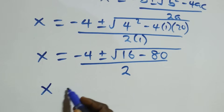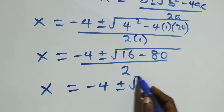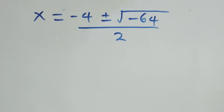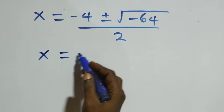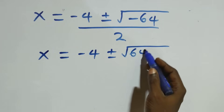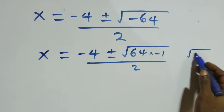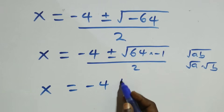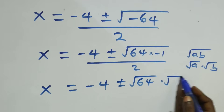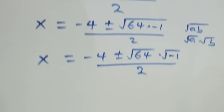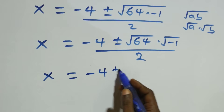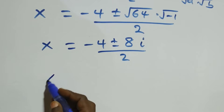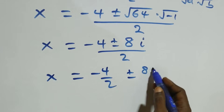This becomes x equals minus 4 plus or minus square root of 16 minus 80, which is minus 64, over 2. We write this as x equals minus 4 plus or minus square root of 64 times minus 1, over 2. Using the property that root(A times B) equals root A times root B, this becomes minus 4 plus or minus root 64 times root of minus 1, over 2. Root 64 is 8 and root of minus 1 is i, so we have minus 4 plus or minus 8i, over 2. Separating into two fractions: minus 4 over 2, plus or minus 8i over 2.